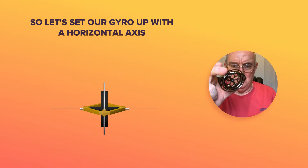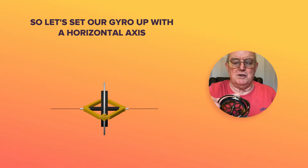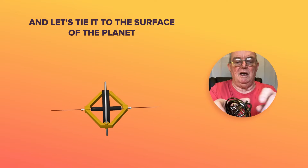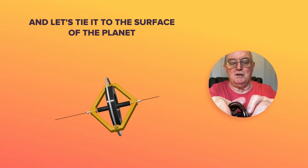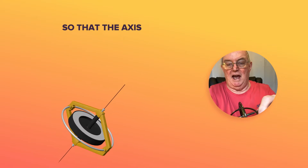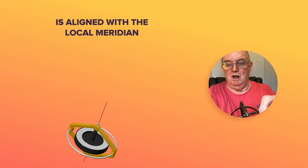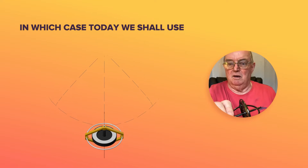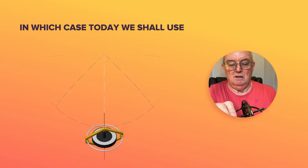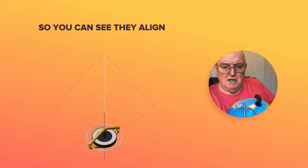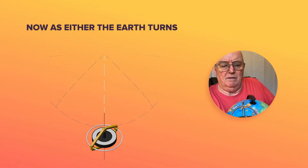So let's set our gyro up with a horizontal axis and let's tie it to the surface of the planet so that the axis is aligned with the local meridian. Today we shall use the Greenwich meridian, so you can see they align.